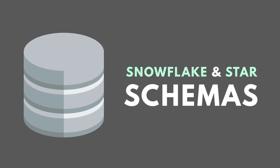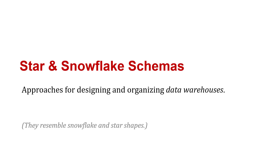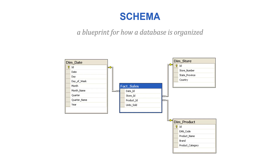The star and snowflake schemas are approaches for designing and organizing a data warehouse, and they're given those names because they resemble the snowflake and star shapes. A schema is a blueprint for how a database is organized — it's kind of like a blueprint on a construction project, but we're just using a blueprint for our database.